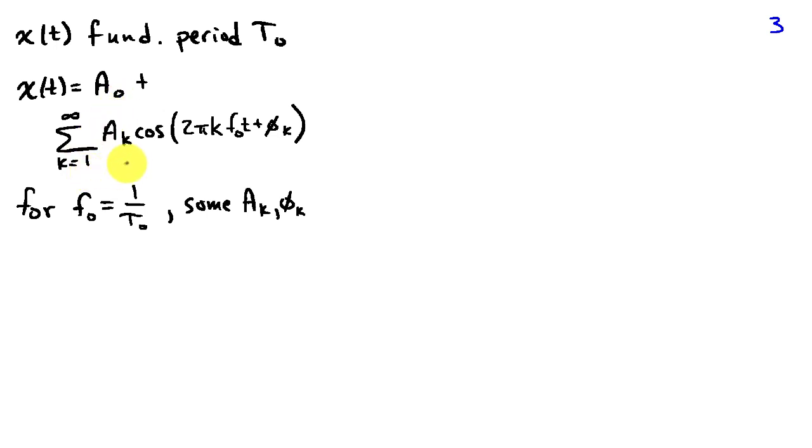Plus a sum of cosines whose amplitudes are Aₖ, and whose phases are φₖ, and whose frequencies are harmonically related. That is, they are integer multiples of a fundamental frequency f₀. And the fundamental frequency f₀ is the inverse of the fundamental period.